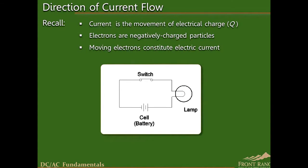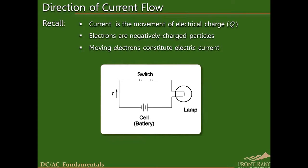On a schematic diagram, a DC current through a wire or component is labeled with an uppercase I, along with an arrow to indicate the direction of current flow.